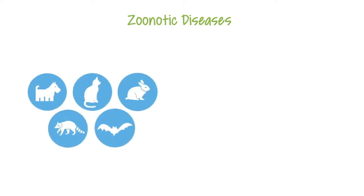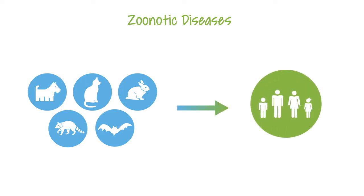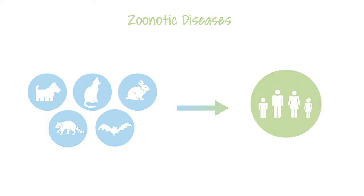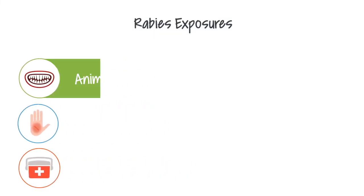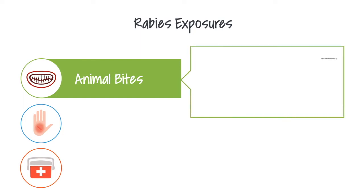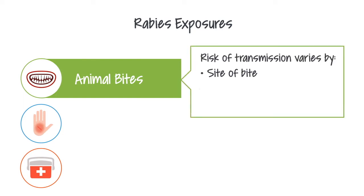Rabies is a zoonotic disease, meaning it is an infection common in animal populations that occasionally infects humans. All mammals are susceptible to rabies infection. The most dangerous and common type of rabies exposure is animal bites. The risk of transmission varies by the site of the bite, the severity of the wound, and the rabies virus variant. For instance, some bat virus variants may be more likely to cause infection after superficial exposures.